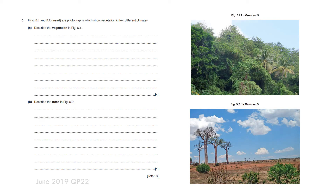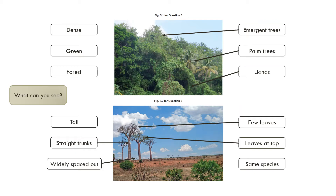Here's a typical question from a June paper: describe the vegetation you can see, and describe the trees you can see. For the top picture, you can see very dense green vegetation — comment on the color. You can see a forest with emergent trees; if it's a tropical rainforest you can identify emergent trees, palm trees and other examples.